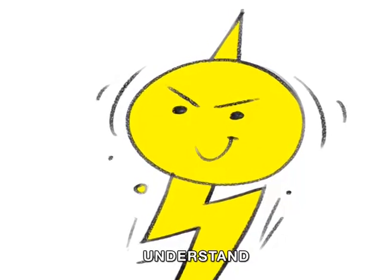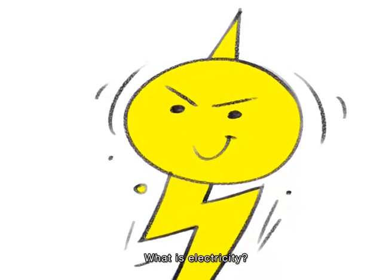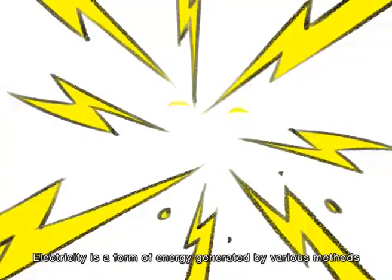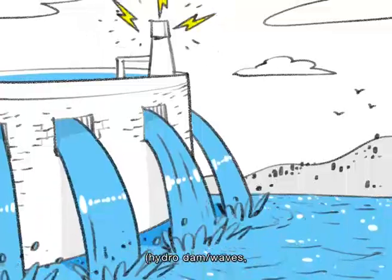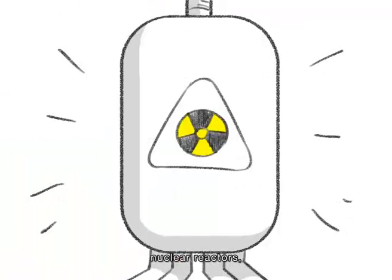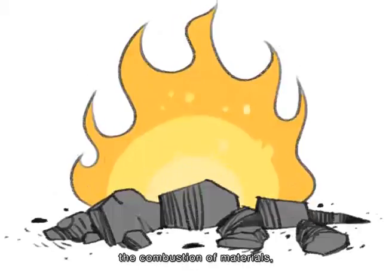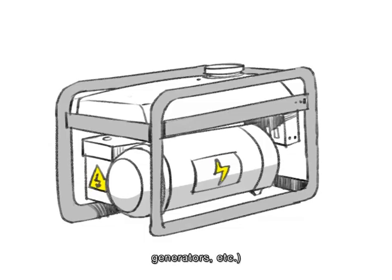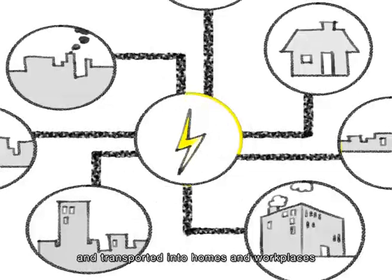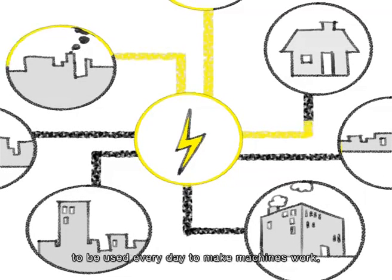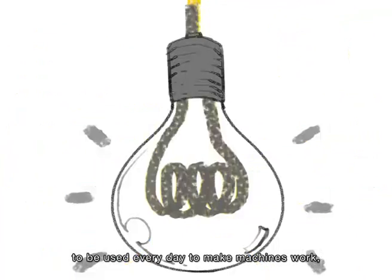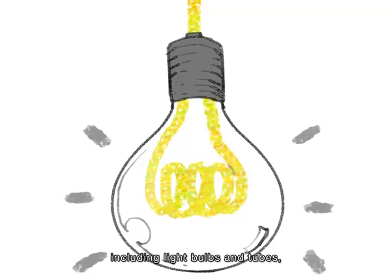What is electricity? Electricity is a form of energy generated by various methods — hydro dams, waves, nuclear reactors, the combustion of materials, wind, generators, etc. It is transported into homes and workplaces to be used every day to make machines work, including light bulbs and tubes.